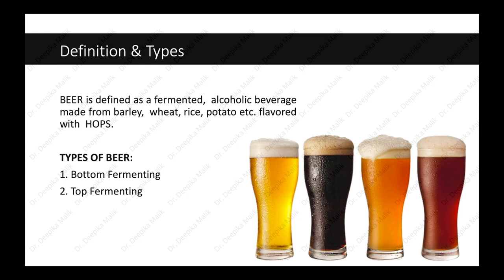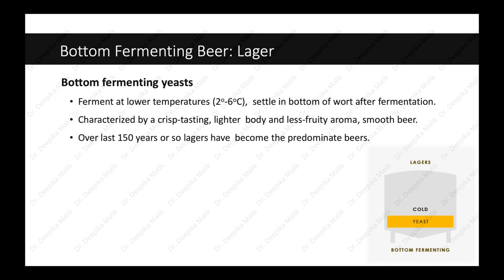Beers can be categorized as top fermenting as well as bottom fermenting. Bottom fermenting beers like lager are produced using bottom fermenting yeasts. As you can see in the diagram, the yeast settles at the bottom of the fermenter. They ferment at a low temperature of 2 to 6 degrees Celsius and settle at the bottom of the wort after fermentation. Wort is a sugar-rich liquid produced by mixing milled grain with hot water, converting starches into sugar. Bottom fermenting beers are characterized by a crisp, lighter body and less fruity aroma — a rounded, smooth beer.